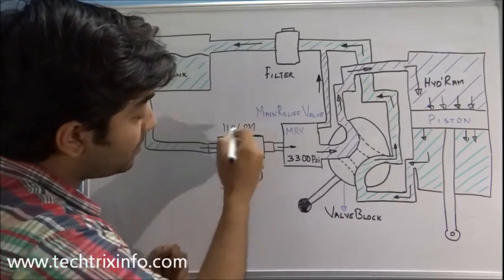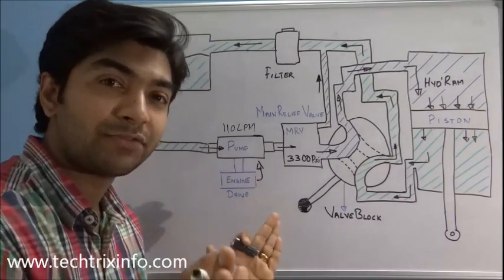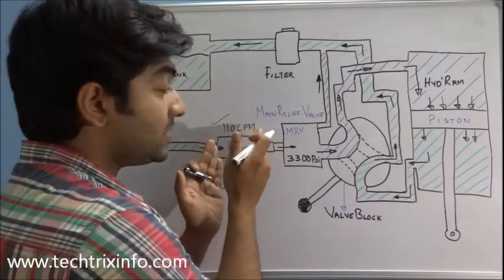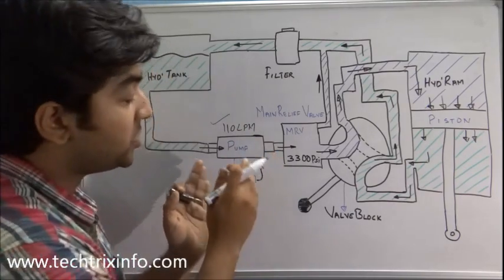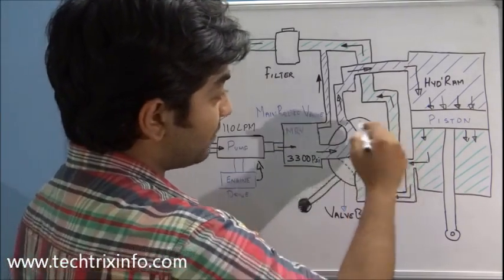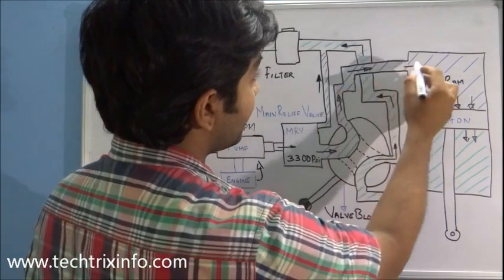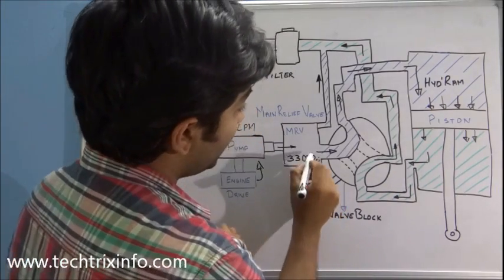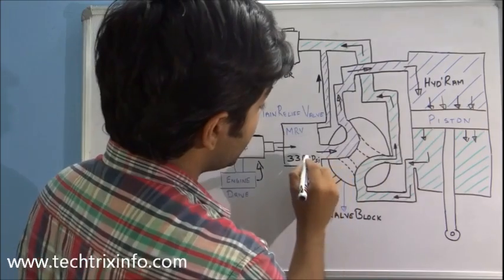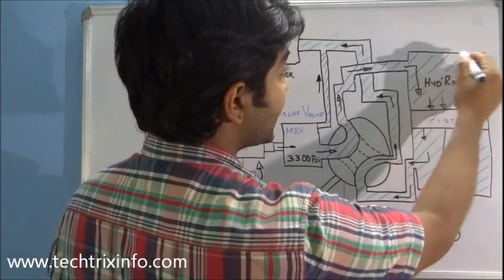When we start the engine, the pump gets its drive. The function of the pump is to create a flow — it creates a flow of 110 LPM in a JCB 3DX backhoe loader machine. It supplies flow through the main relief valve towards the valve block. You can see the route currently selected by the valve block shown as a blue line.